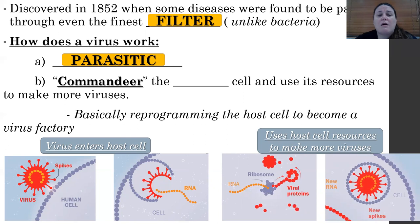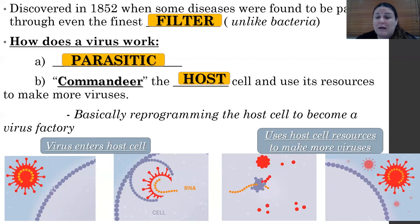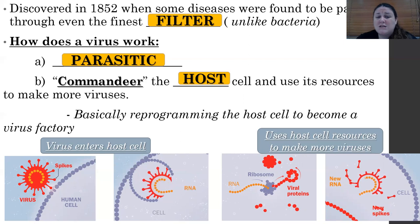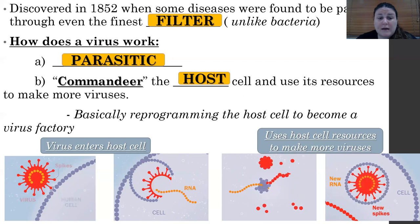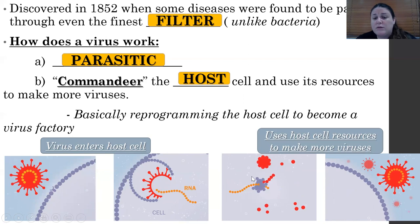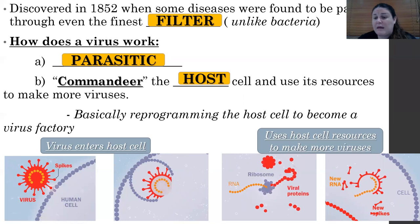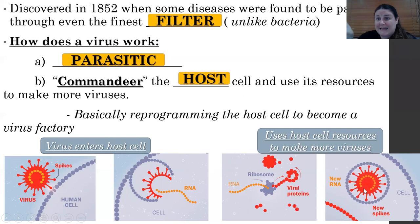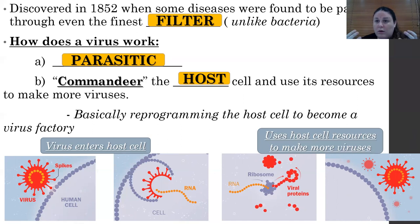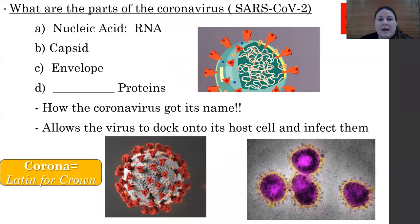So how does a virus work? A virus is parasitic, and basically what it's doing is commandeering the host cell and using its resources to make more viruses — reprogramming that cell to become a little virus factory. What you're seeing on the animations on the screen is the virus entering the host cell. Once it gains entry, it's going to use that host cell's machinery to make pieces of the virus that can then be reassembled into a new virus, which is then released out of the cell. The virus isn't reproducing on its own — it's using another cell to do that for it.